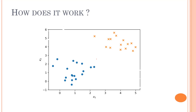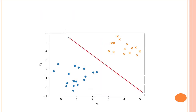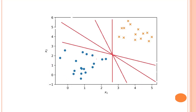The problem arises when we look at a broader picture — we can have more than one line. This line also separates the two classes, this line also separates the two classes. Similarly, we can have multiple lines — line one, line two, line three, line four — we can have N number of lines which can separate out the two classes.